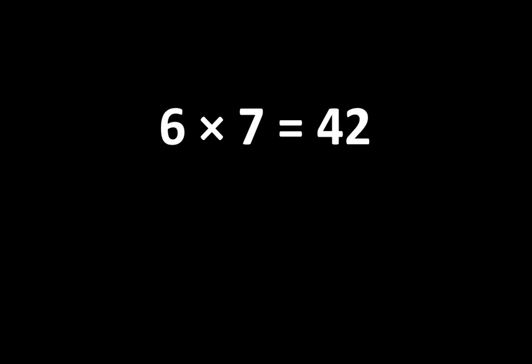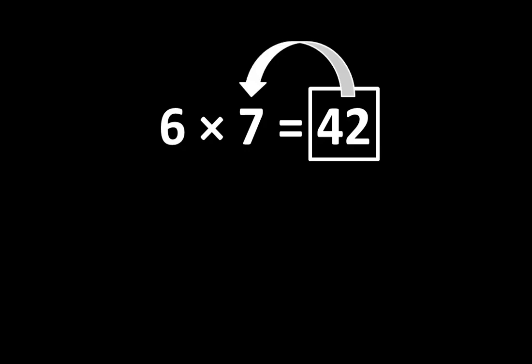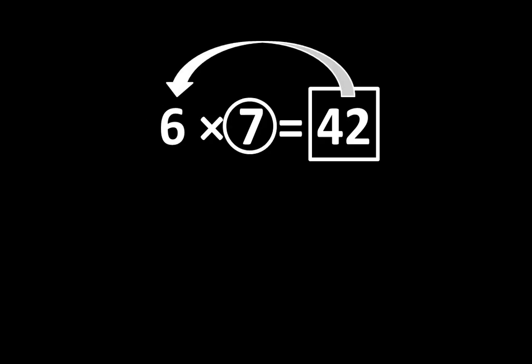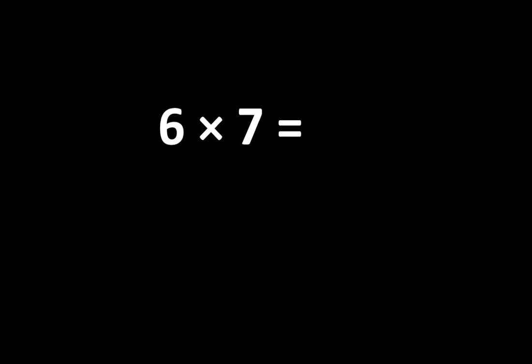When you examine 6 times 7 is equal to 42, you may notice that 42 is greater than 6, and 42 is also greater than 7. But how many times greater? 42 is 7 times greater than 6. And there is another connection: 42 is also 6 times greater than 7. As you can see, there are many relationships among these numbers. So, 6 times 7 is equal to 42, and that is an important idea. But as you can tell, it's not the end of the story.